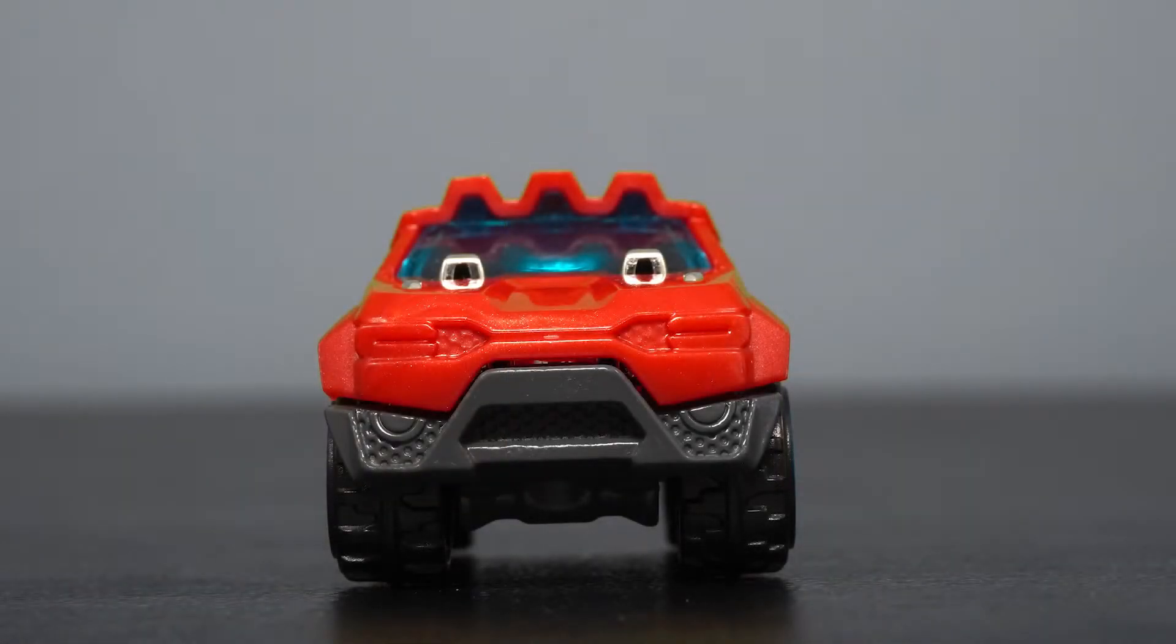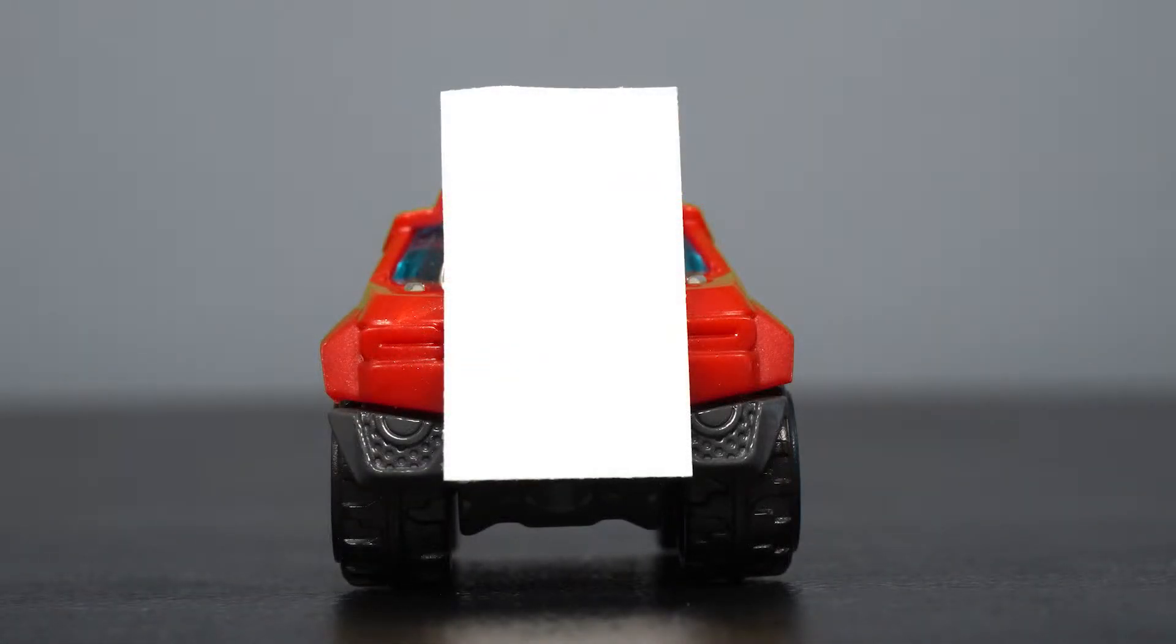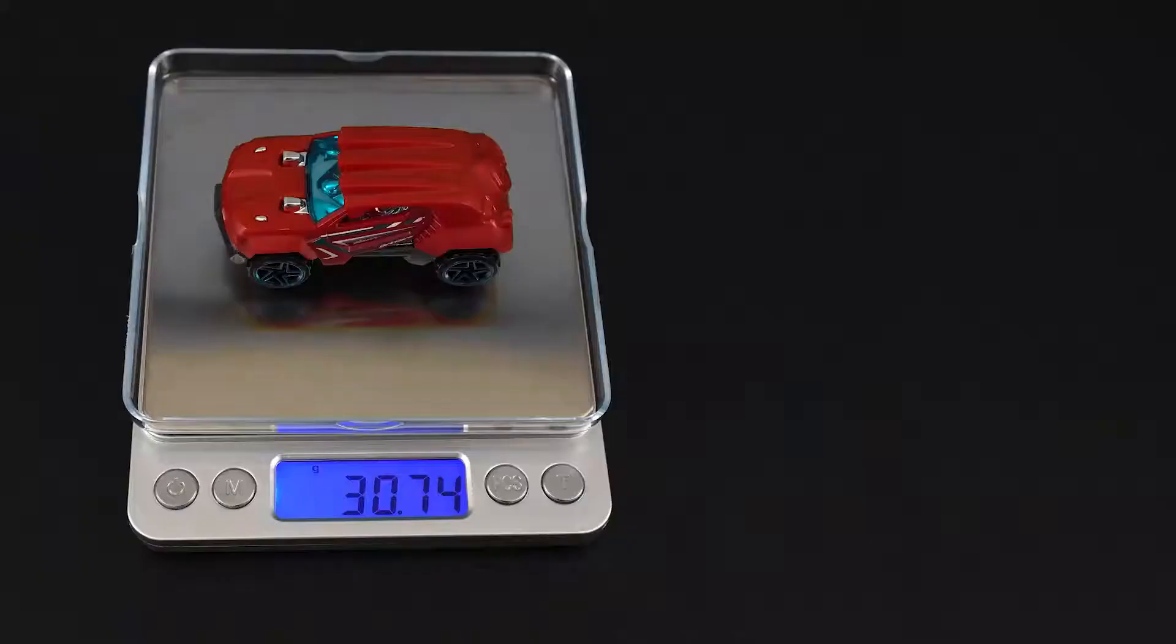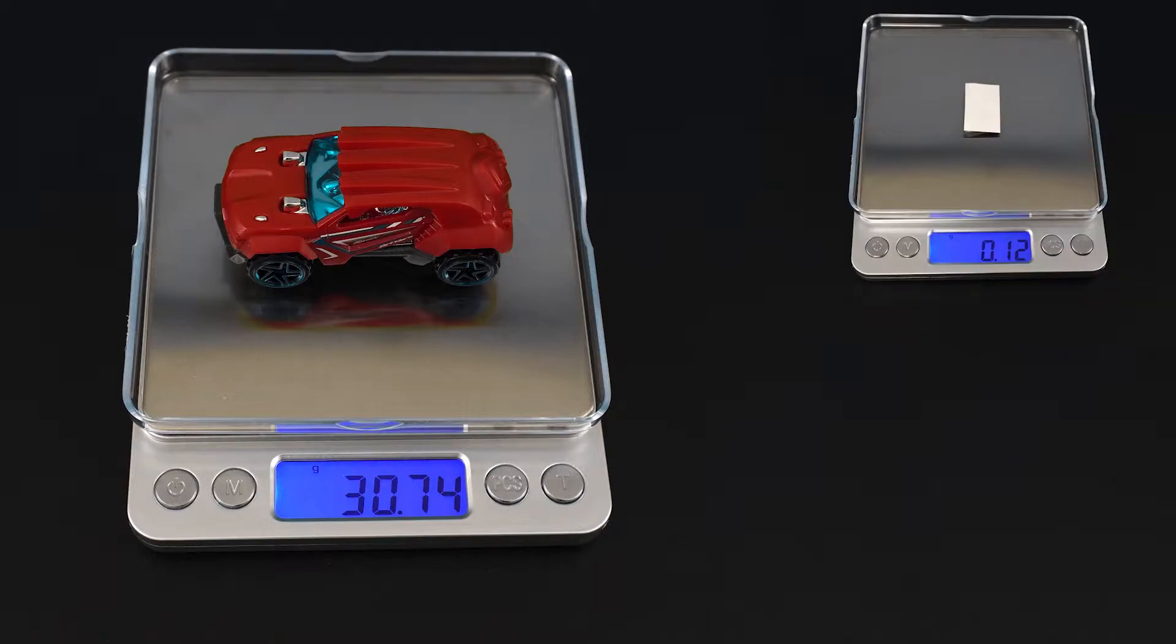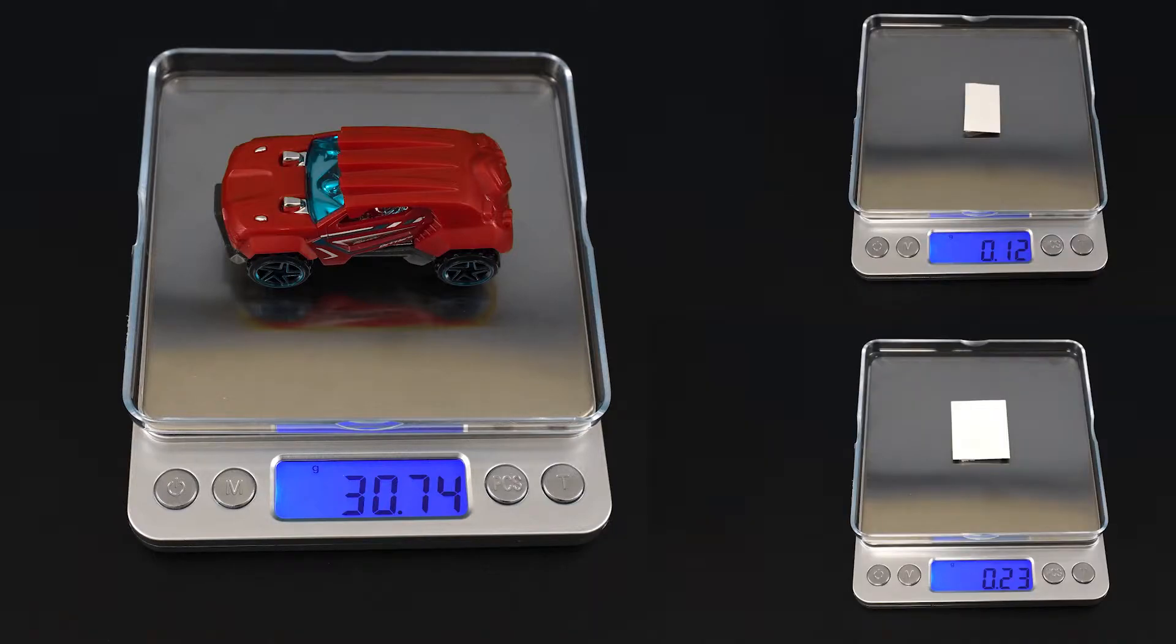We will use the poster board to increase the size of the car's frontal area without changing the car's weight very much. Indeed, the weight of these cutouts, including the tape to attach them to the car, is less than 1% of the car's weight.